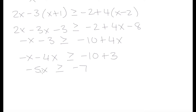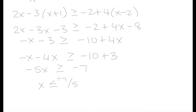So we have minus x minus 4x which is minus 5x, greater than or equal to negative 10 plus 3 which is minus 7. Now to solve for x, we divide both sides by minus 5. Because we're dividing by a negative number, we have to flip the inequality. So x is less than or equal to negative 7 divided by negative 5, which is 7 over 5.